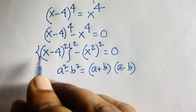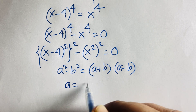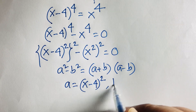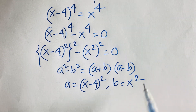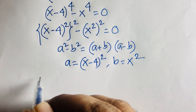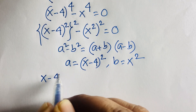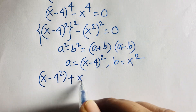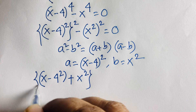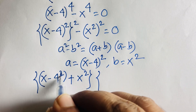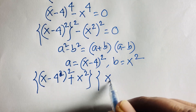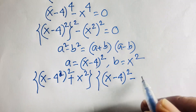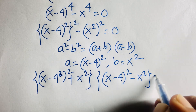Here a is equal to (x minus 4) whole squared, and b is equal to x squared. Applying the difference of squares identity, we get: [(x-4)² plus x²] times [(x-4)² minus x²] equals 0.